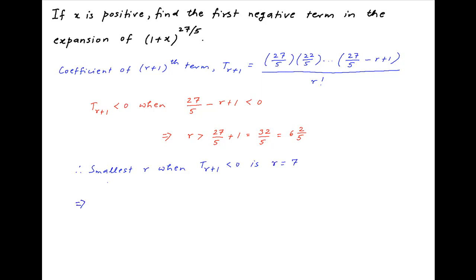Which implies that the eighth term in the expansion of 1 plus x raised to the power 27 upon 5 is negative, which is the required answer.